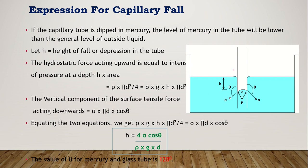For capillary fall, take a tub of mercury and immerse a glass tube into it. Since mercury has high specific gravity, it can't rise — it falls below the general level. The meniscus is in the reverse direction. There is a hydrostatic force trying to push mercury upward, and there is surface tension force. The two forces to consider for capillary fall are surface tension force and hydrostatic force.